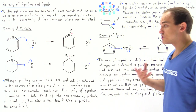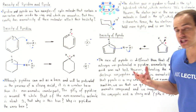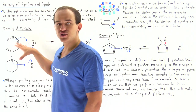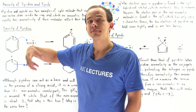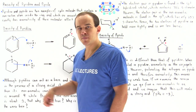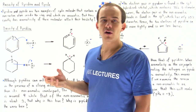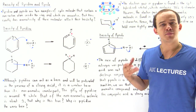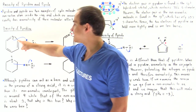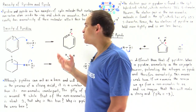But why is pyridine a worse base than its non-aromatic counterpart? The answer has to do with conjugation and the fact that the lone pair of electrons is found in a different orbital. The electron pair in pyridine is found in the sp2 hybridized orbital, which contains about 33% S character. If we examine the nitrogen in pyridine, it is sp2 hybridized.